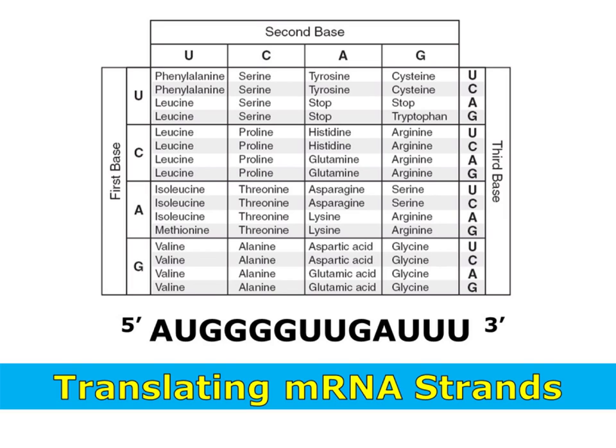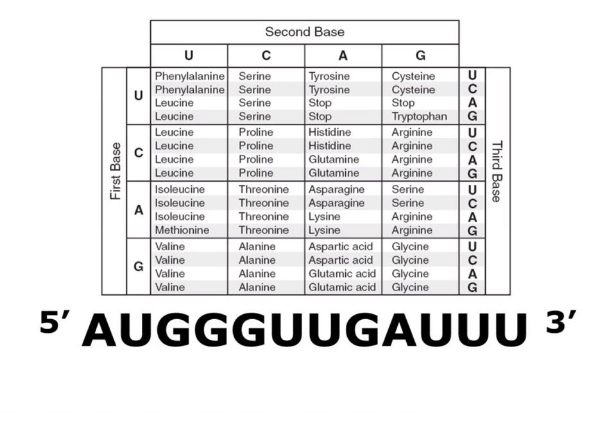This video will review how to translate a strand of mRNA using your codon chart. The first step of translating an mRNA strand is to put a line after every third base. This defines our reading frame and keeps us from mixing up our codons.